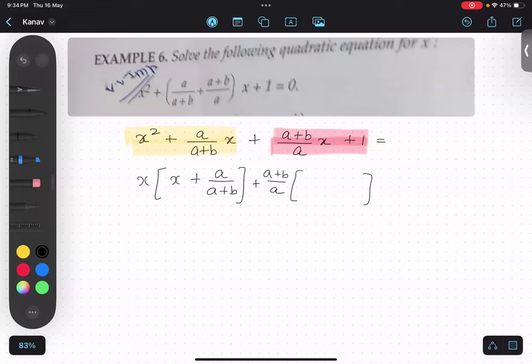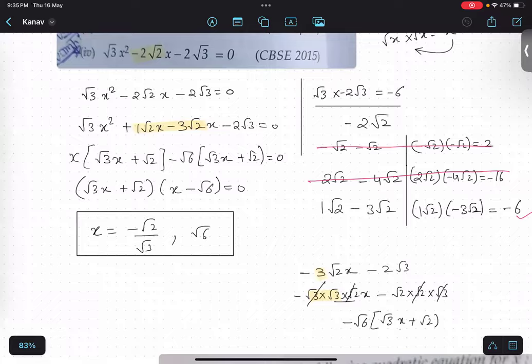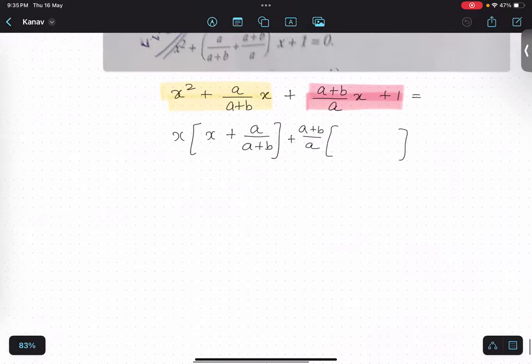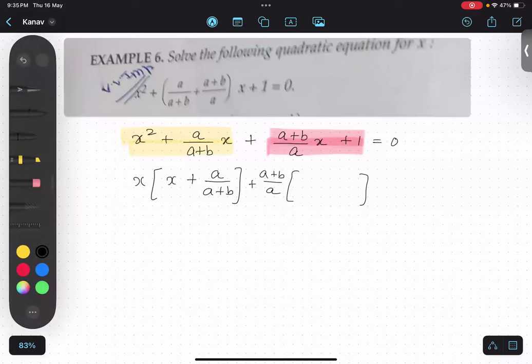Now, when we take common, let's say, one second. When we take common, let's say 2x plus 6. What is common in this? 2.